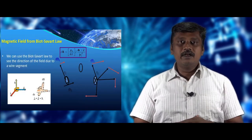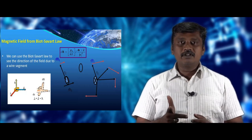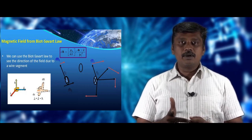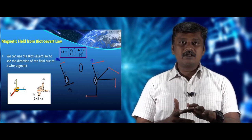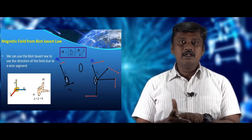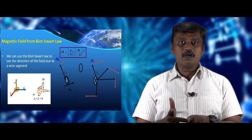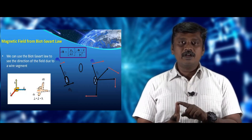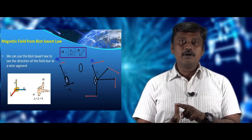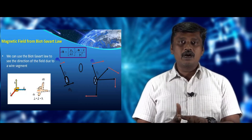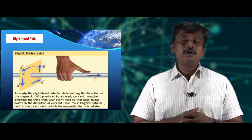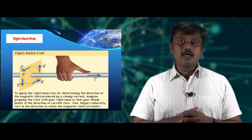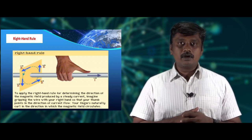It is possible to find the direction of the magnetic induction using Biot-Savart law. Keep the first three fingers of your right hand mutually perpendicular to each other. One finger denotes the direction of ds (the current element), another denotes the small r (distance from the current element to the point), and the thumb denotes the direction of the magnetic induction. The magnetic induction is perpendicular to both r and the current element ds.